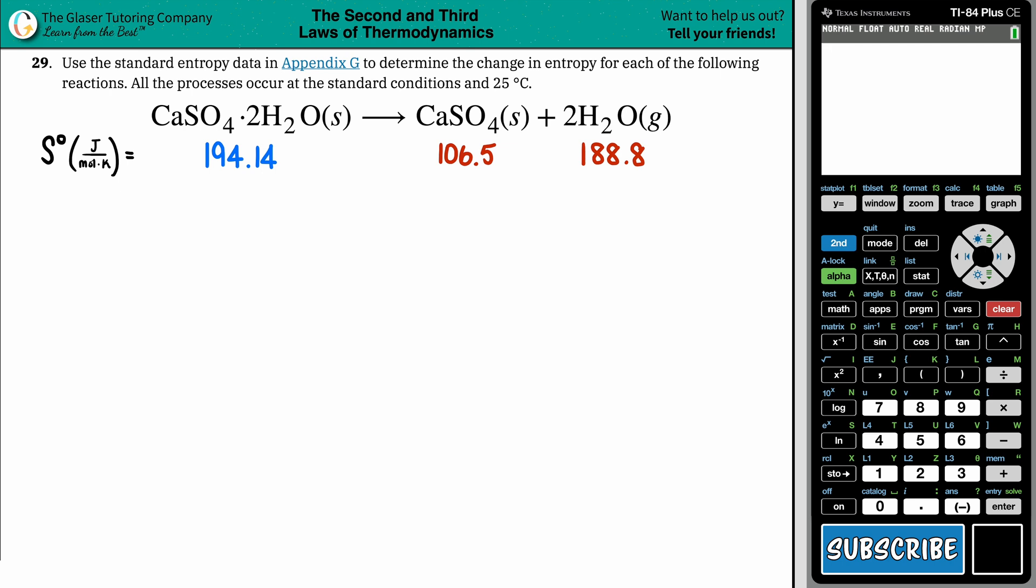Number 29. Use the standard entropy data in Appendix G to determine the change in entropy for each of the following reactions. All the processes occur at the standard conditions and at 25 degrees Celsius.